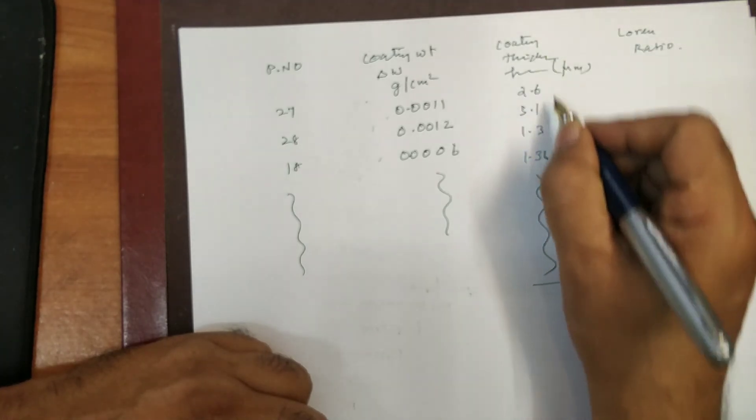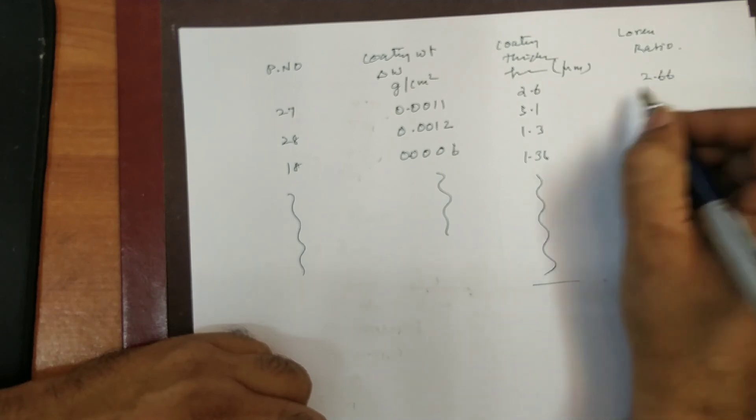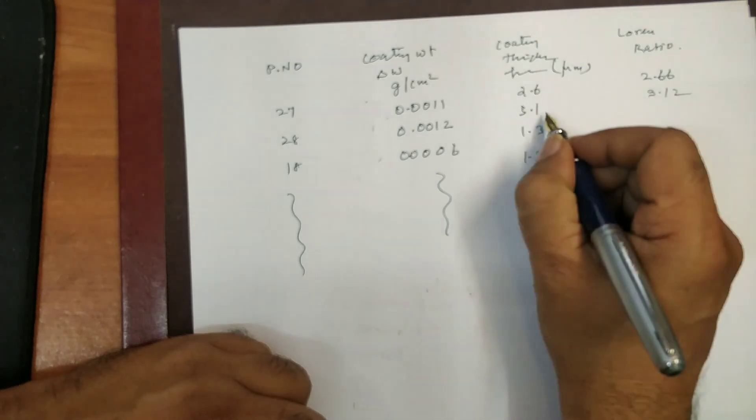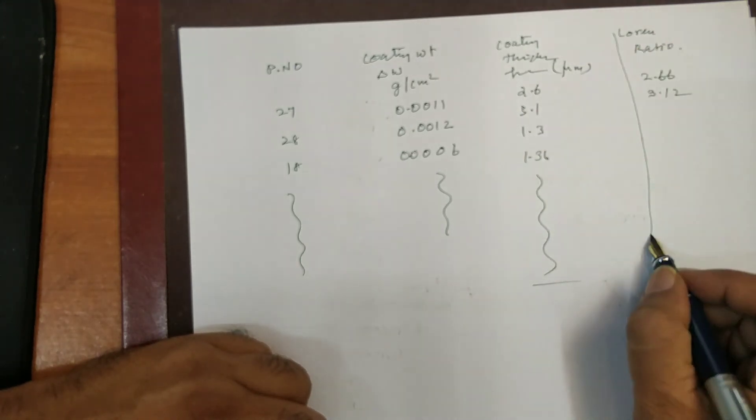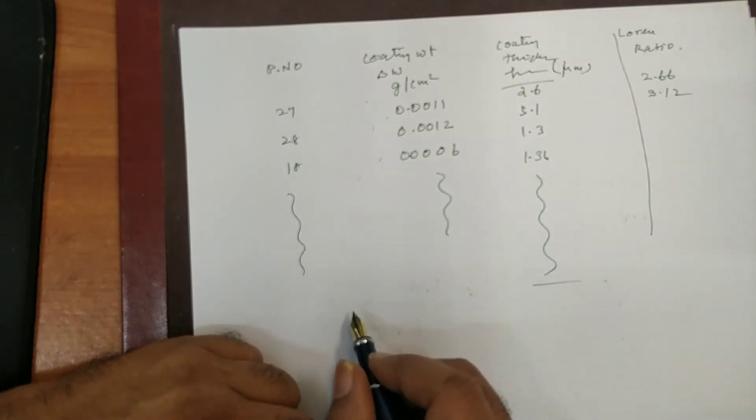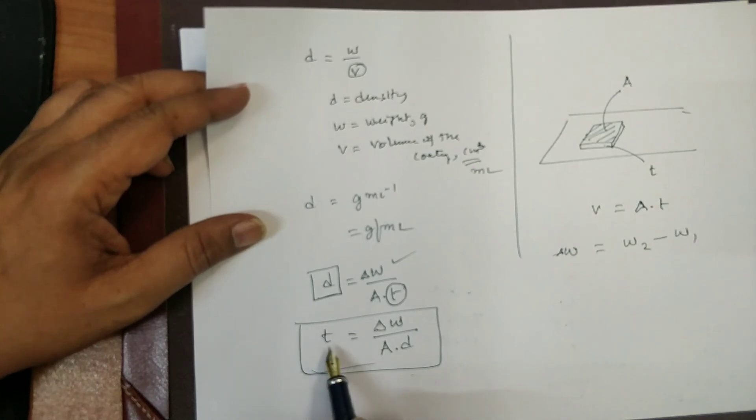So, the obtained value, the experimental value, the theoretical value. The theoretical value is 2.66. And here I got 2.6. And here 3.12. And I got 3.1. So, it was much closer to this. So, from this it has been proved that using this formula. That is which formula I used. I used this.